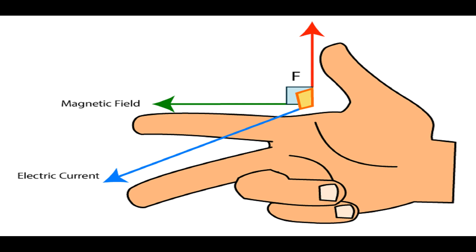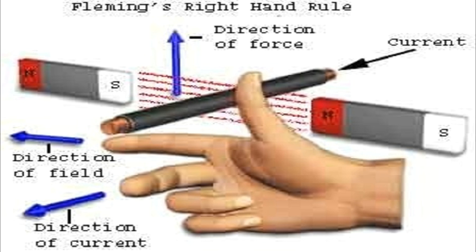The right hand is held with the thumb, first finger, and second finger mutually perpendicular to each other at right angles. The thumb is pointed in the direction of the motion of the conductor relative to the magnetic field.